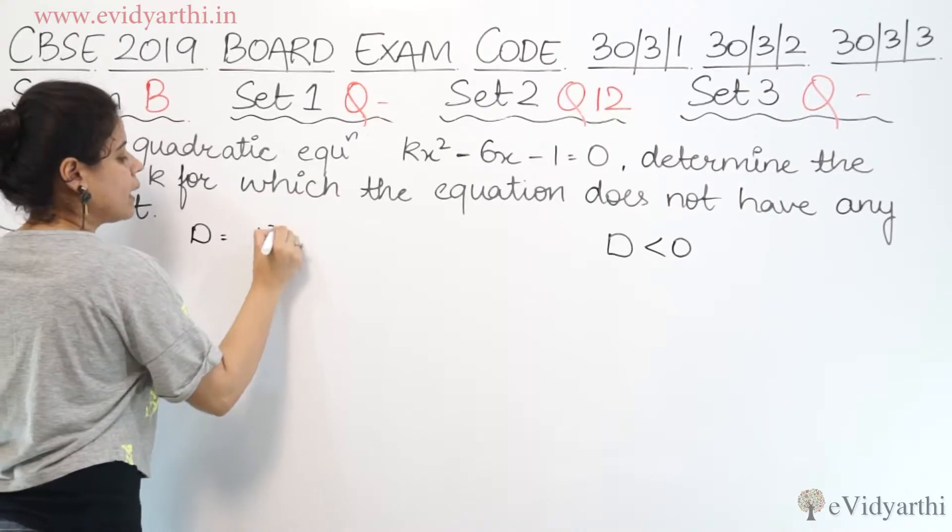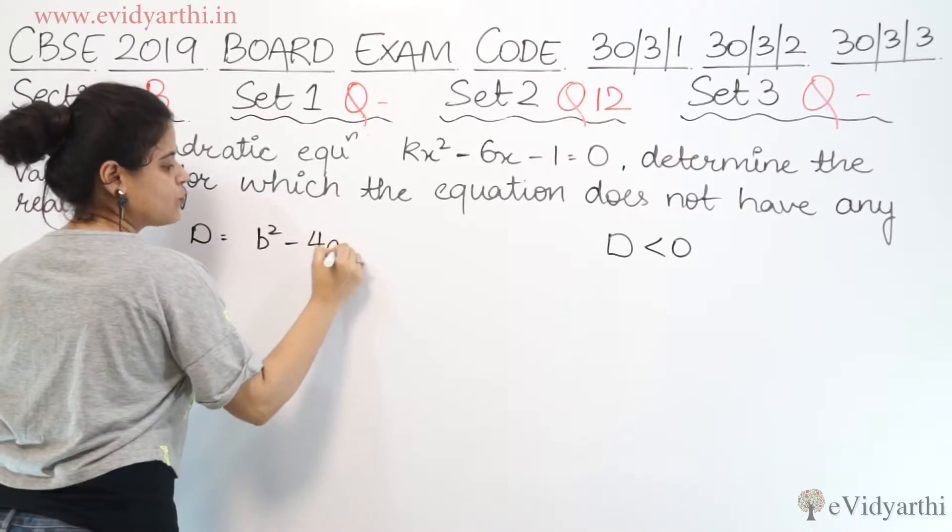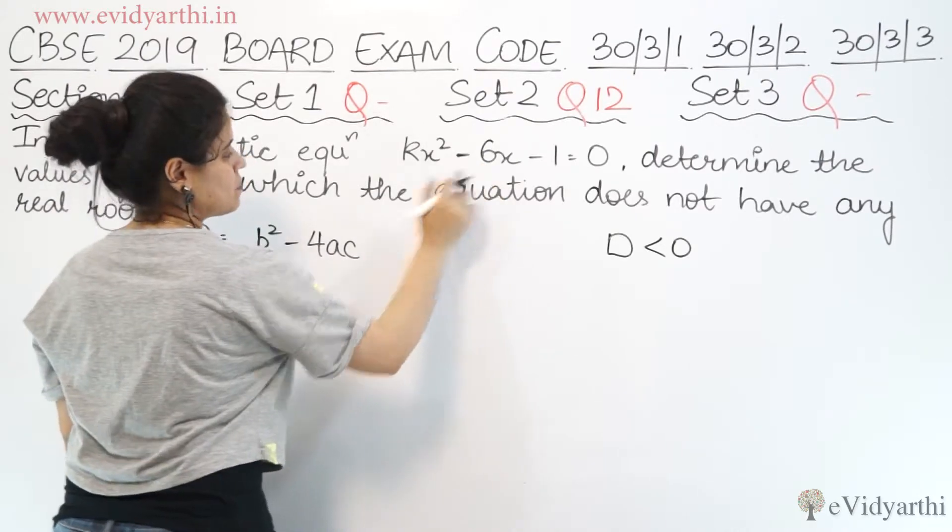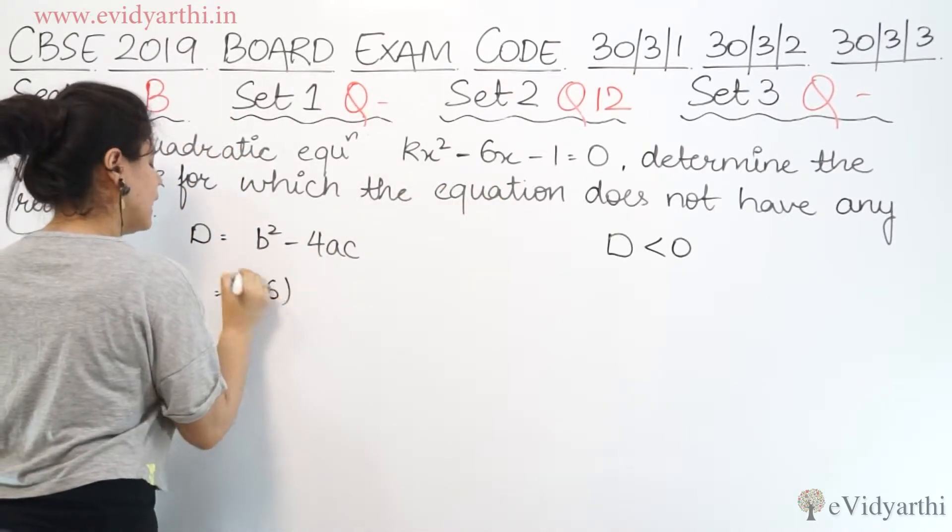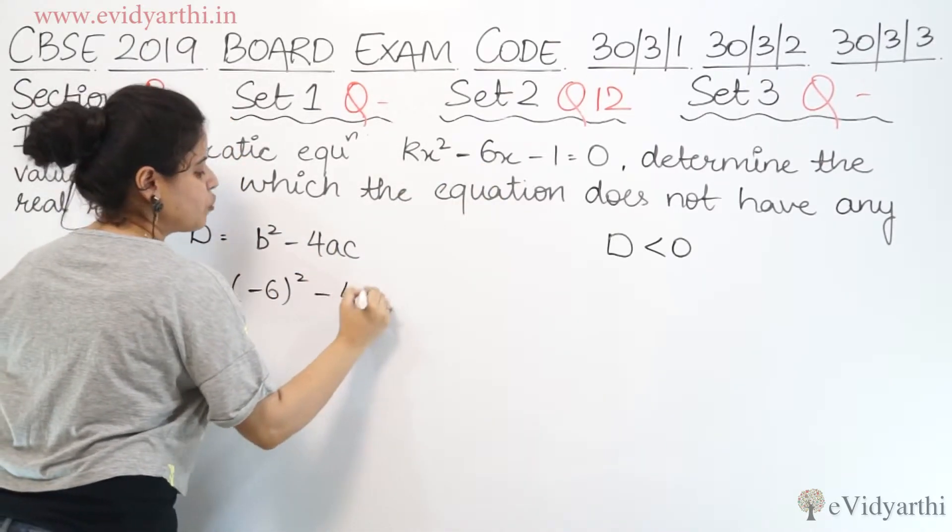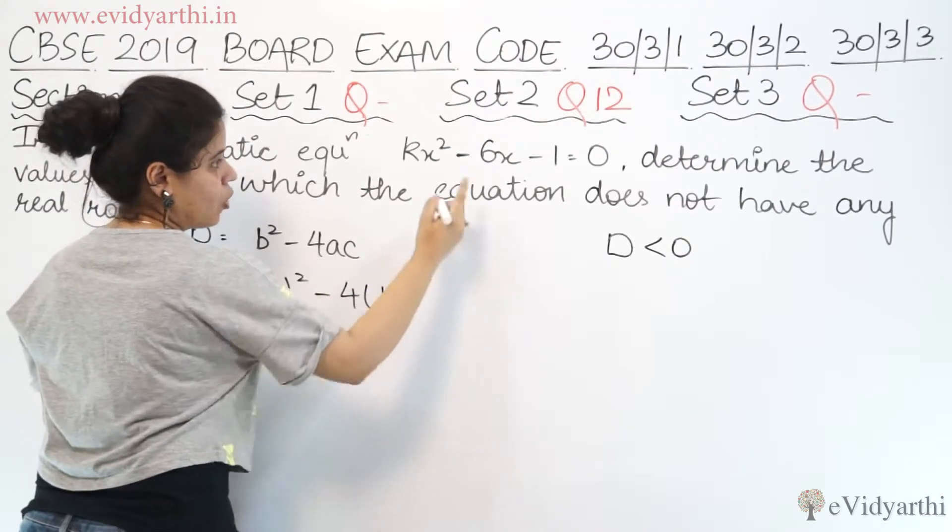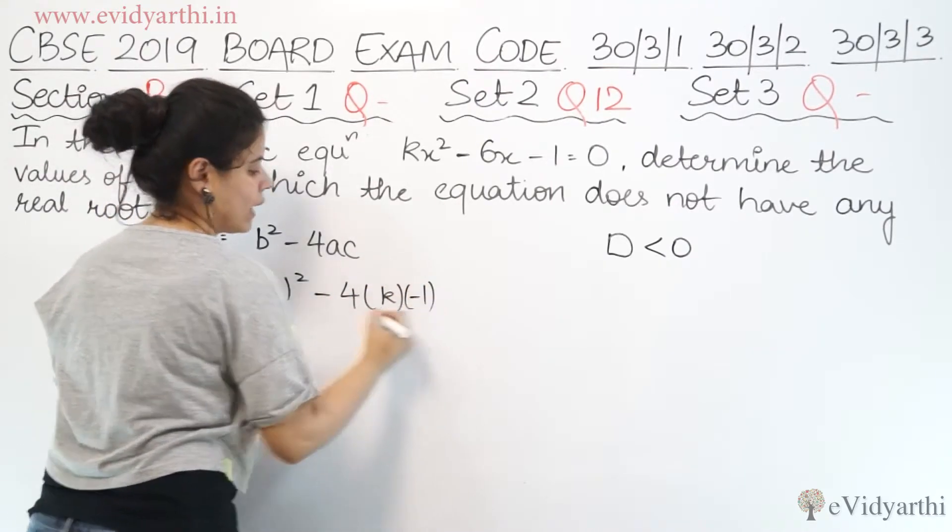The formula is b square minus 4ac. So b is minus 6. So minus 6 square minus 4, where a is k and c is minus 1.